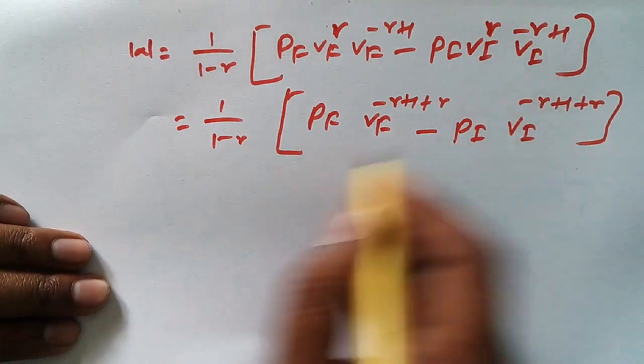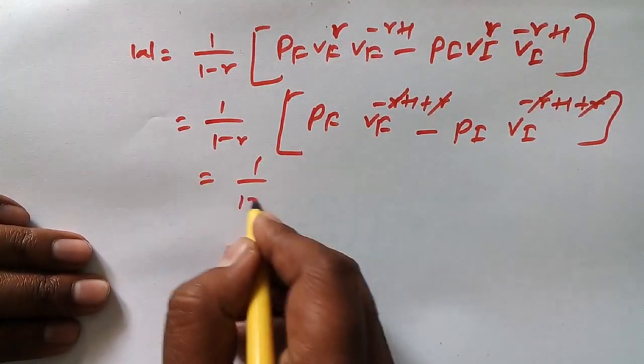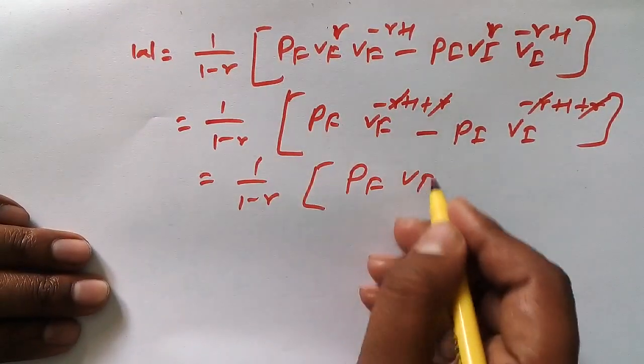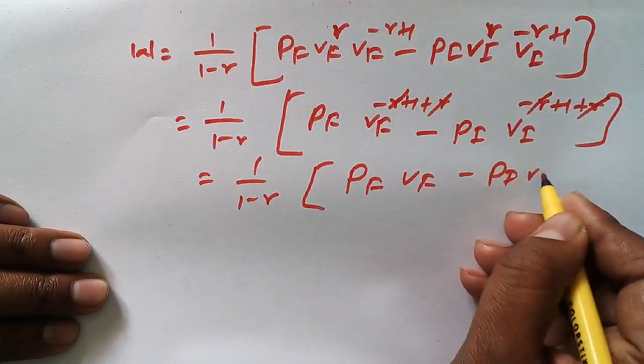Because of the same term, the powers will be added. So minus P_I V_I to the power minus gamma plus 1 plus gamma. The same case is happening here also. So gamma would be cancelled. What would be remaining? 1 over 1 minus gamma, P_F V_F minus P_I V_I.